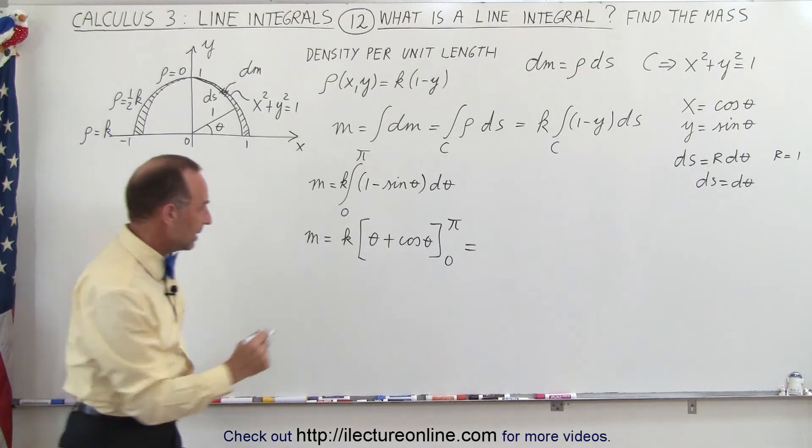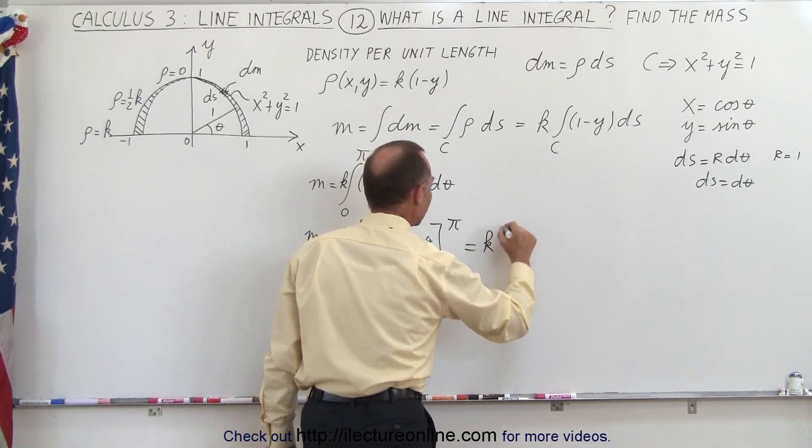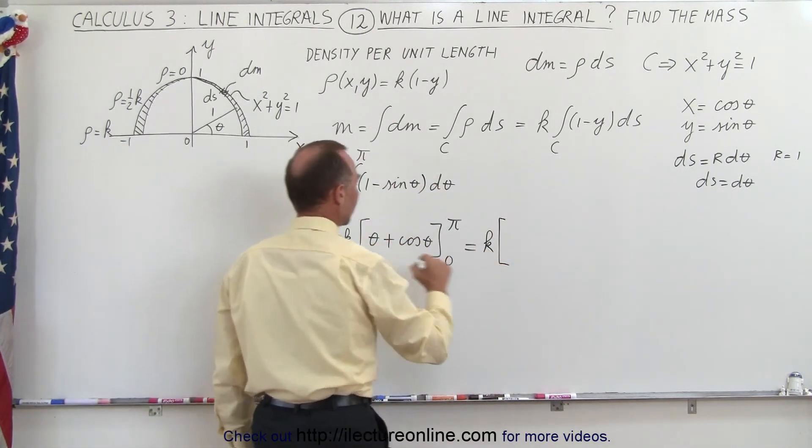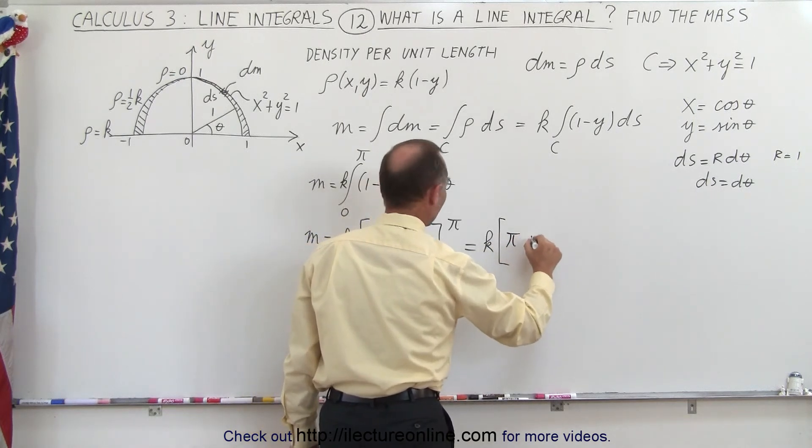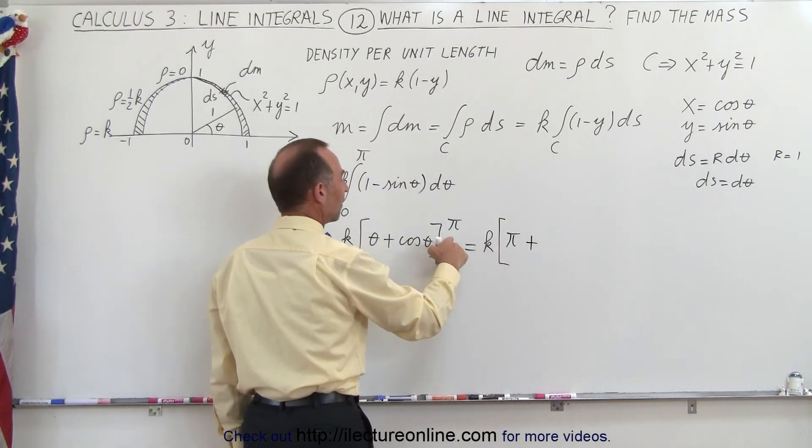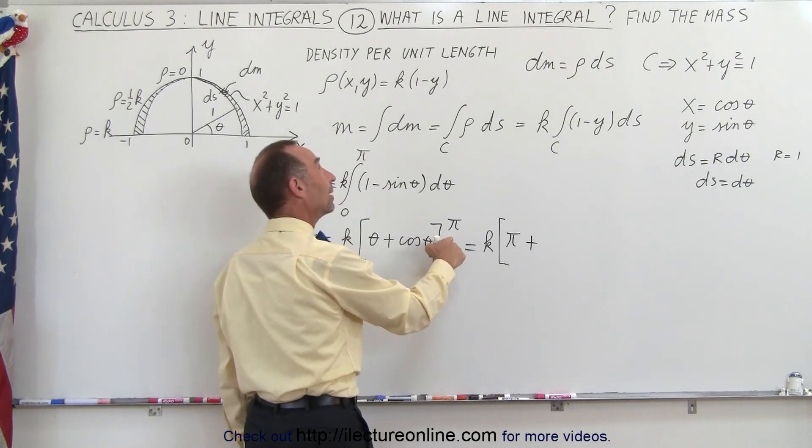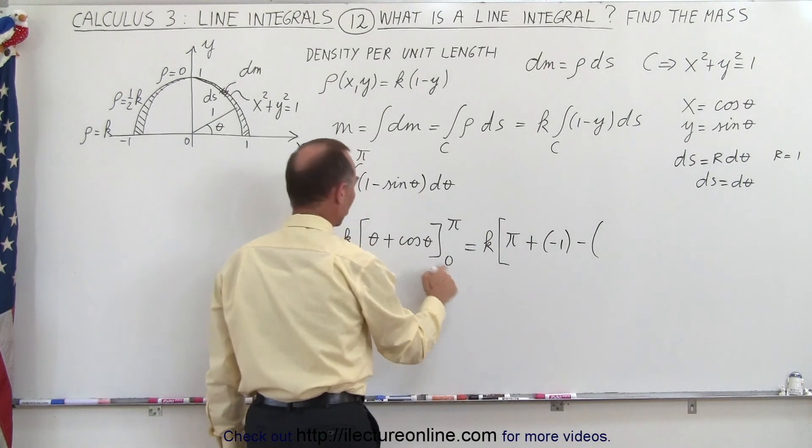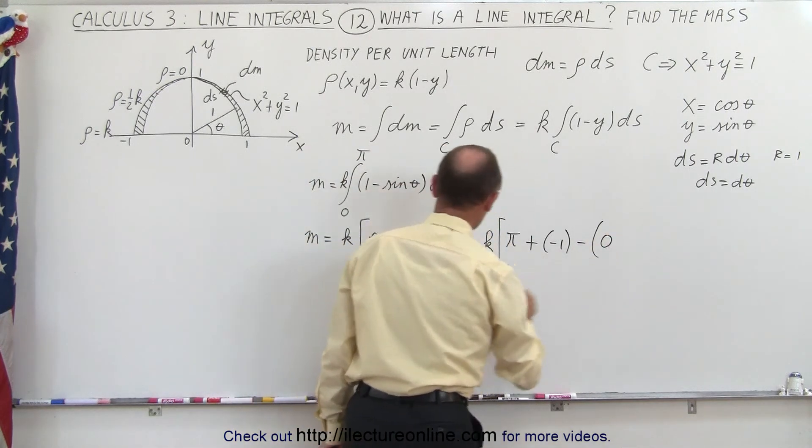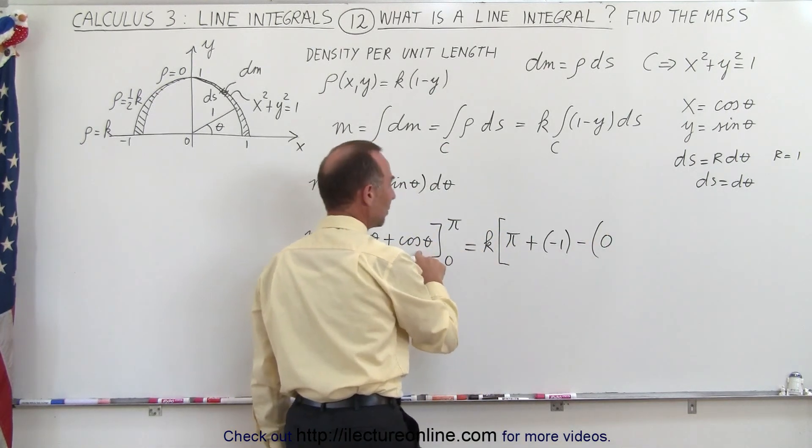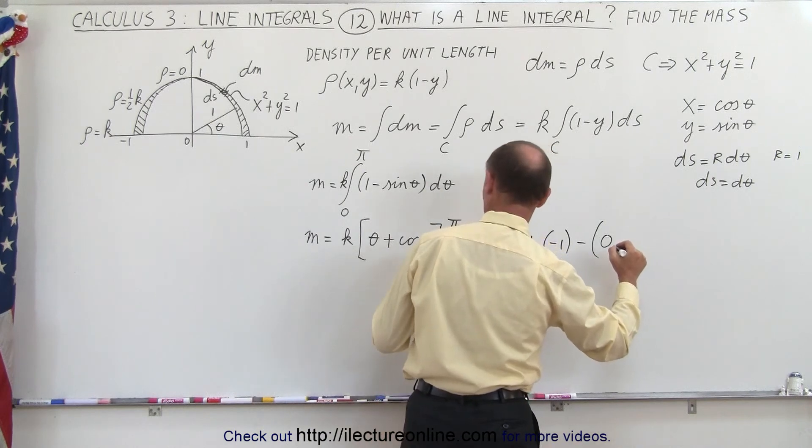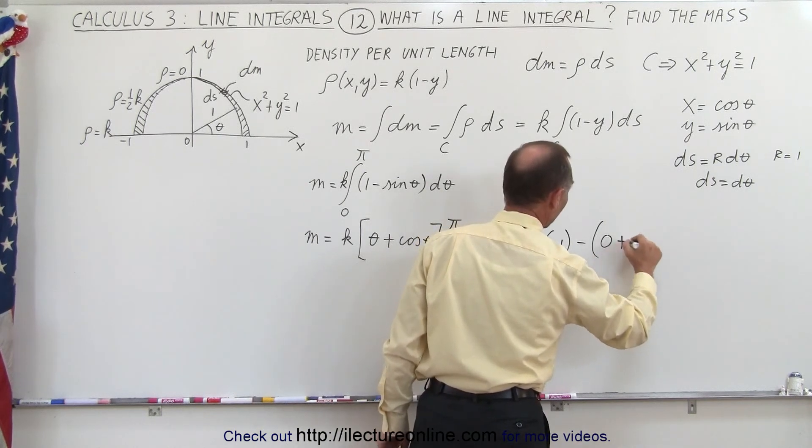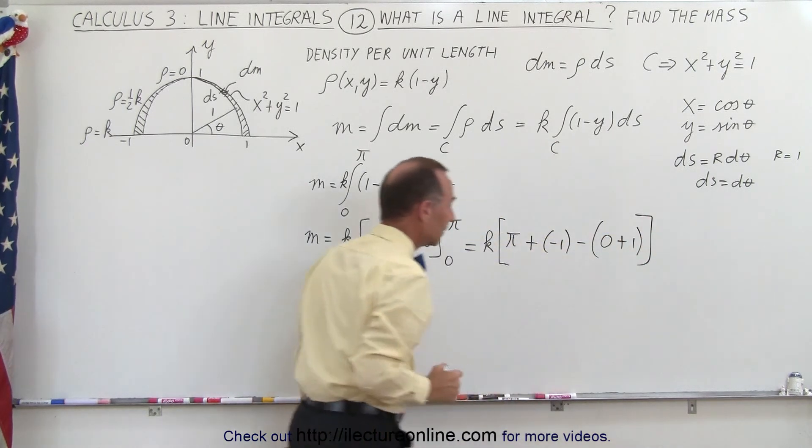So let's go ahead and plug that in, and so we end up with k times, when we plug in the upper limit, we get pi plus the cosine of pi. Well, the cosine of pi, that's 180 degrees, that's minus 1. And now subtract from that, when plugging the lower limit, which is 0, and the cosine of 0 is going to be plus 1.